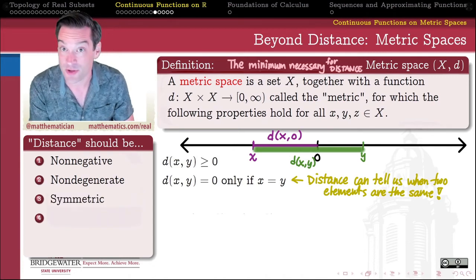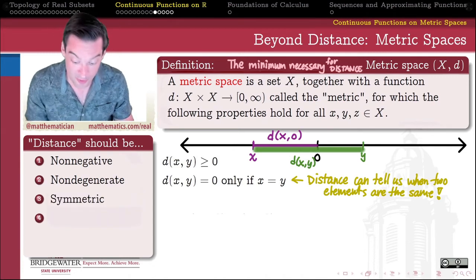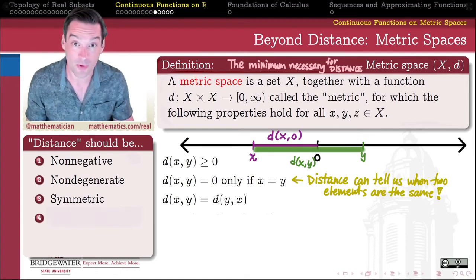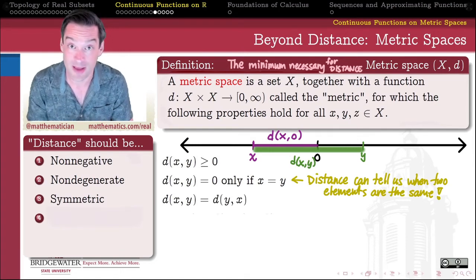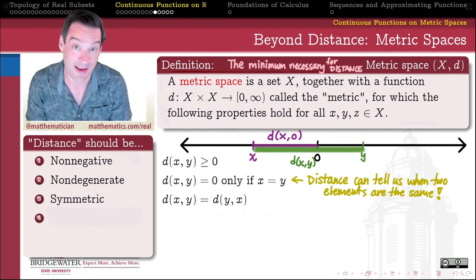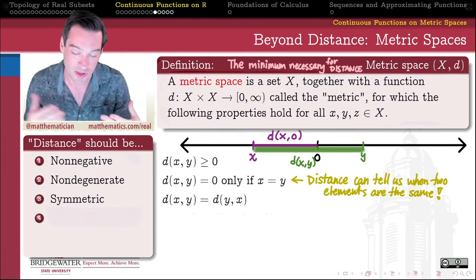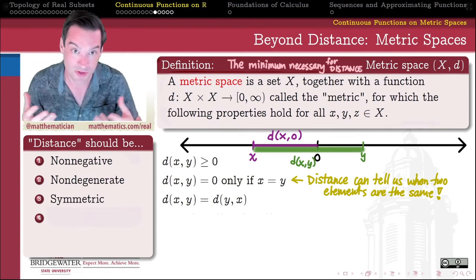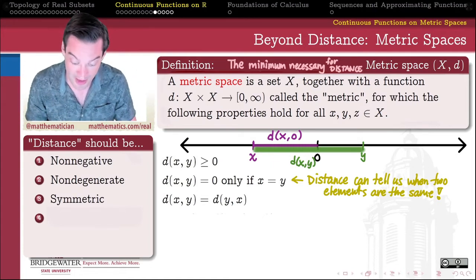Third property is symmetry. We don't want the distance between x and y to depend on the order in which we pronounce the words x and y. The distance between x and y is the same as the distance between y and x. This is something that we generally take for granted when we even just use the English words, distance between something and something. It doesn't matter which order we pronounce that second half of the sentence.